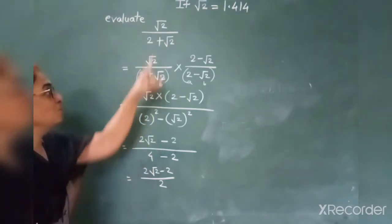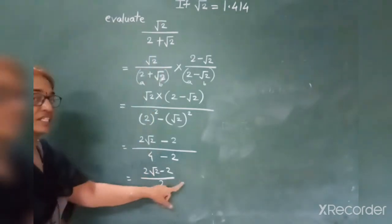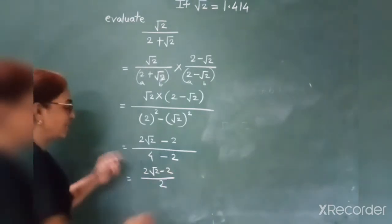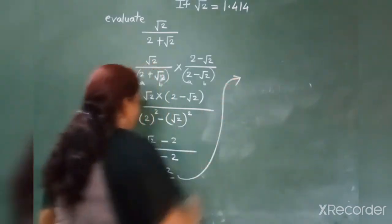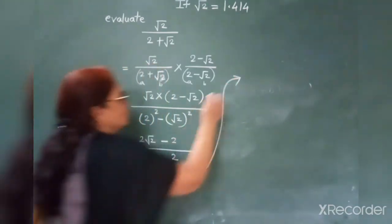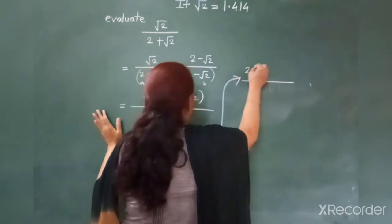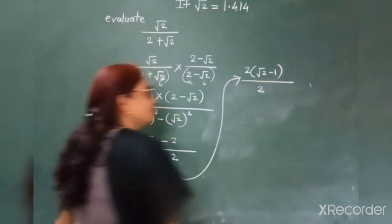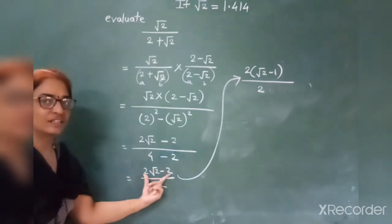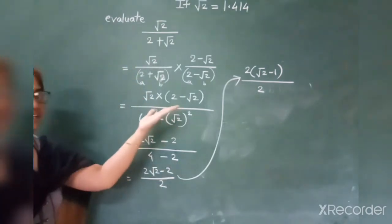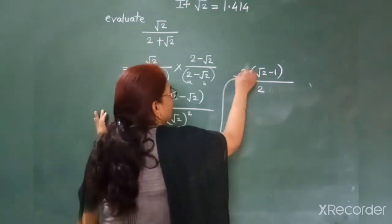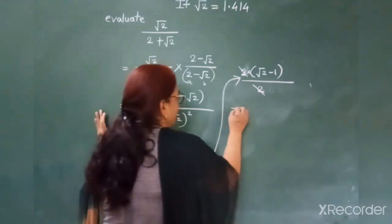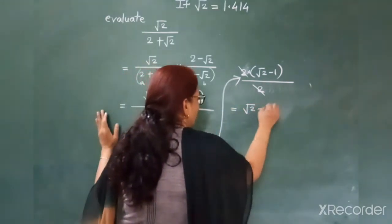Don't put the value of root 2 here yet, because we can simplify further. We can take 2 as common from the numerator. So take 2 common from the numerator — it becomes 2 in bracket (root 2 minus 1), and the denominator is 2. Since 2 is a common factor in both, the 2 cancels out, and the remaining factor is root 2 minus 1.